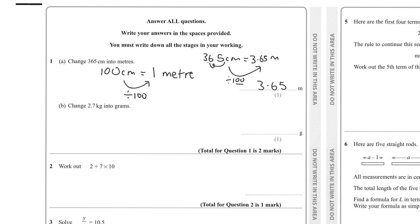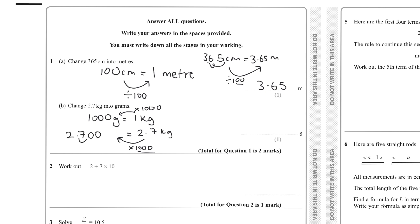Then it says change 2.7 kilograms into grams. We know there are 1000 grams in one kg, so to go from kg into grams we multiply by 1000. Multiplying by 1000 is the same as moving forward three decimal places. So 2.7 becomes 2700 grams. My technique: for divides, move the decimal back by the number of zeros; for multiplication, move it forward.